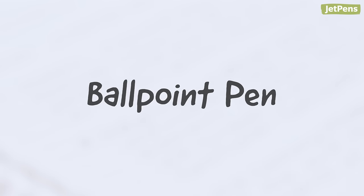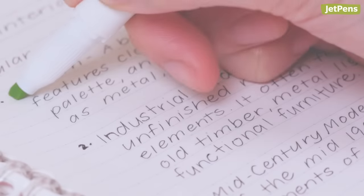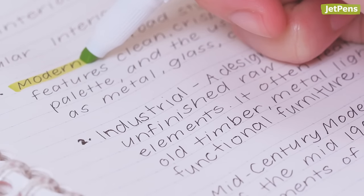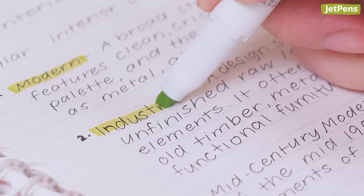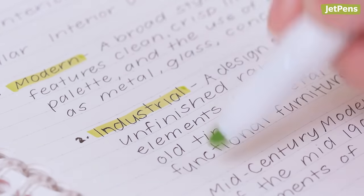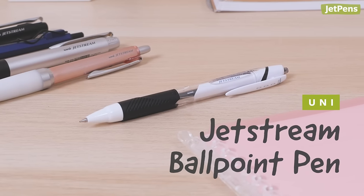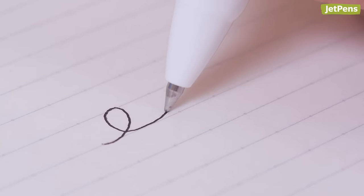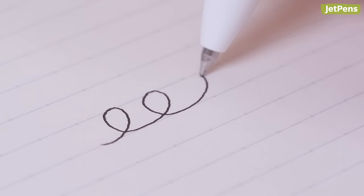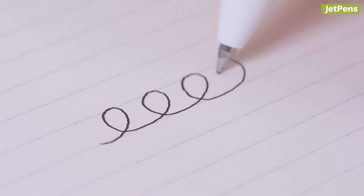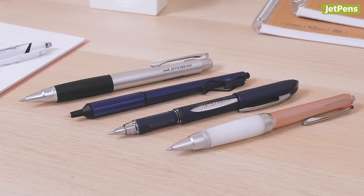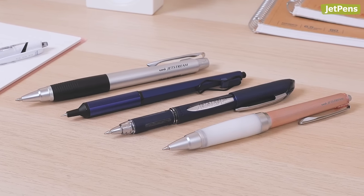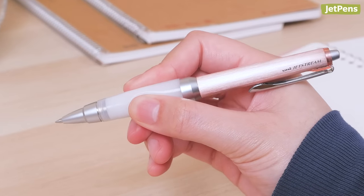Ballpoint pens may not come in as many colors as gel pens, but they have the upper hand in smear resistance. The Uni Jetstream is a standout among ballpoint pens, featuring fast-drying, low-viscosity ink that won't smudge under highlighters. It also writes as smoothly as a gel pen. Choose from a variety of pen bodies, including an ergonomic alpha gel grip option.